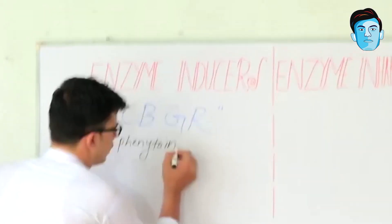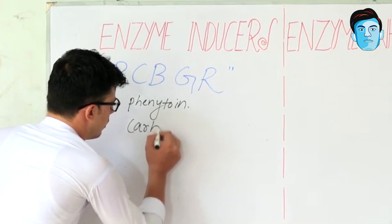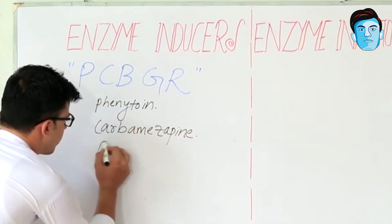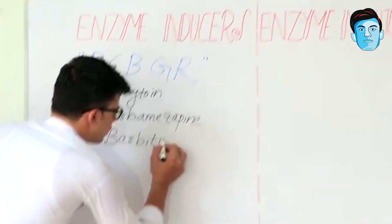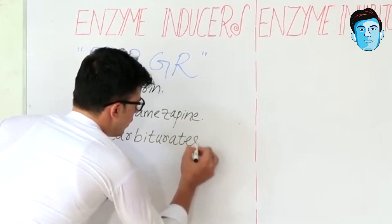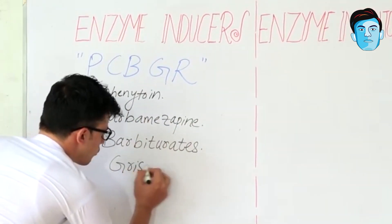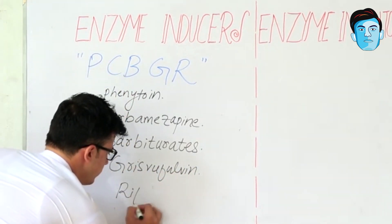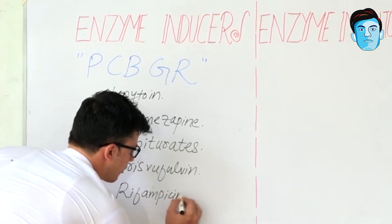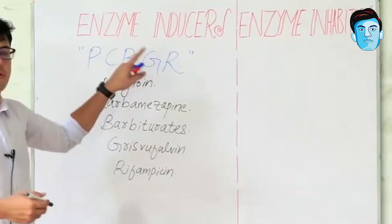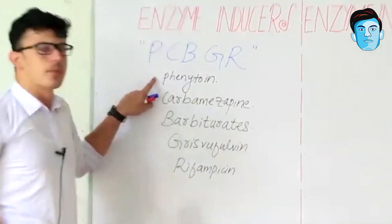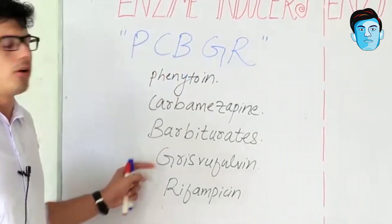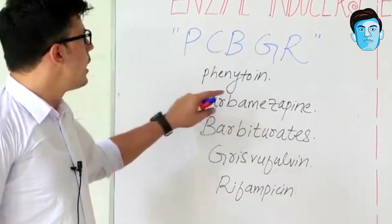P stands for Phenytoin, C stands for Carbamazepine, B stands for Barbiturates, G stands for Griseofulvin, and R stands for Rifampicin. So the enzyme inducer drugs are Phenytoin, Carbamazepine, Barbiturates, Griseofulvin, and Rifampicin. That's all about the enzyme inducer drugs.